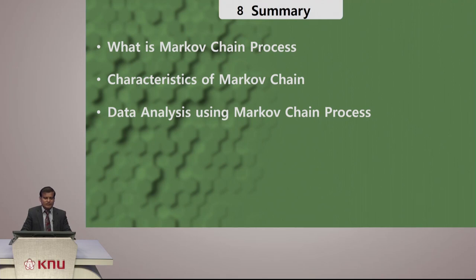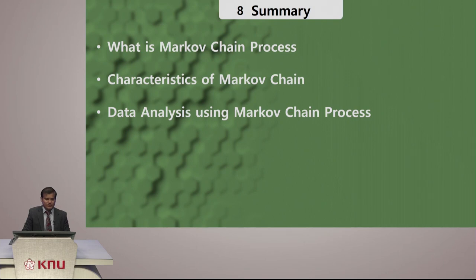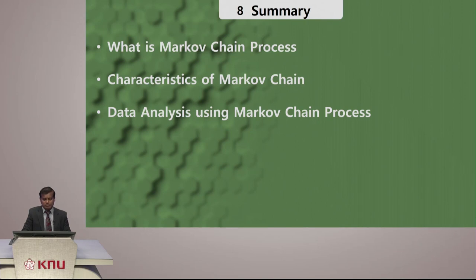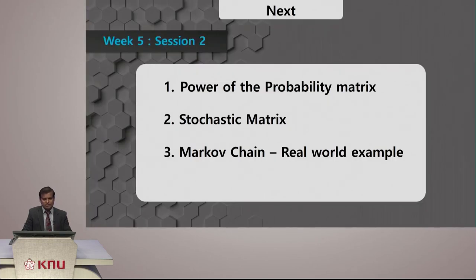That is what we saw today: we discussed the Markov chain process, several characteristics and traits of the Markov property, and finally how to analyze certain data using the Markov chain. Based on your current data, you can predict future events. This Markov chain is very important and useful in various domains, not only in statistics but also in artificial intelligence. We are going to deal with this Markov process with many examples in upcoming lectures, where we will discuss the power of the probability matrix, stochastic matrix, and Markov chain with real-world examples. Looking forward to seeing you there. Goodbye.